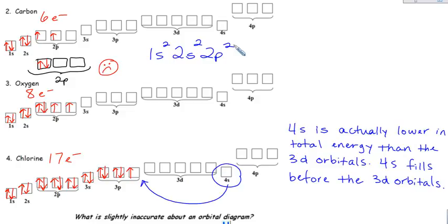Here's the only kind of bummer about the electron configuration. When you hit the p orbitals or d orbitals, it doesn't really show how they're distributed. It doesn't show you that those 2p electrons are in separate orbitals. You just have to know that if you have 2 electrons in the p orbitals, they would each be in separate ones, because there are a total of 3 available p orbitals.